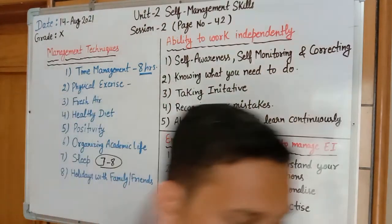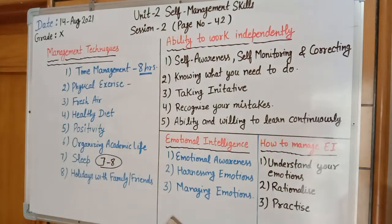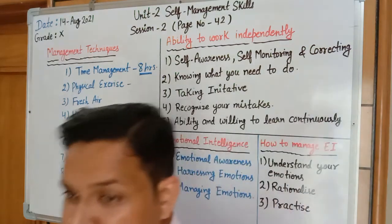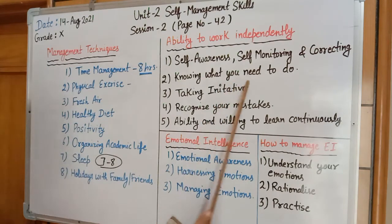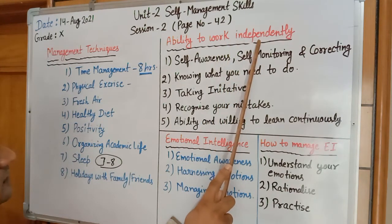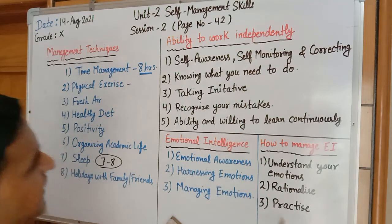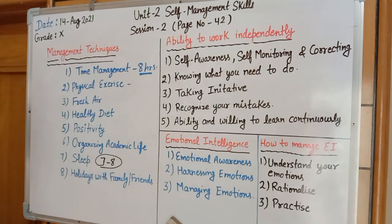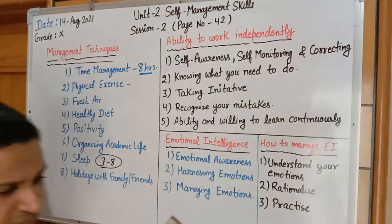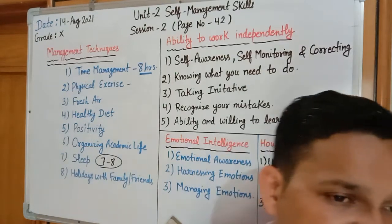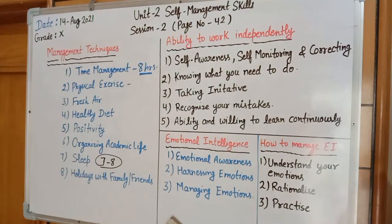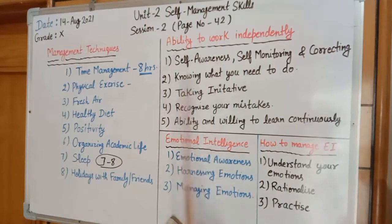The second quality for working independently is knowing what you need to do — evaluating yourself on what to do and what not to do. If you know what is beneficial and what is harmful for you, you can be a successful independent worker. The third quality is taking initiative. If you have the capability to take initiative for new tasks, new challenges, or in a business or office environment, you have the ability to work independently.